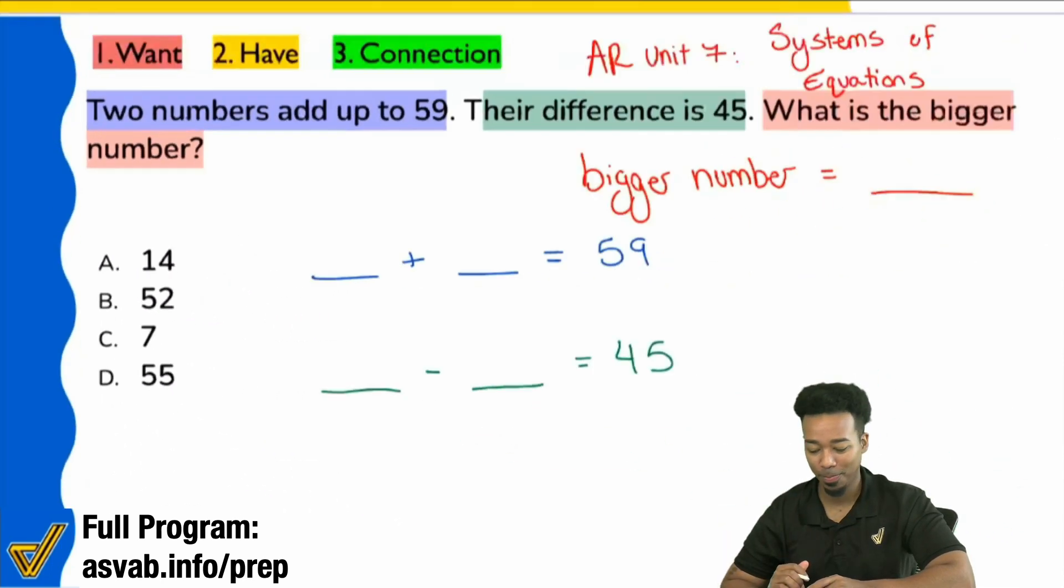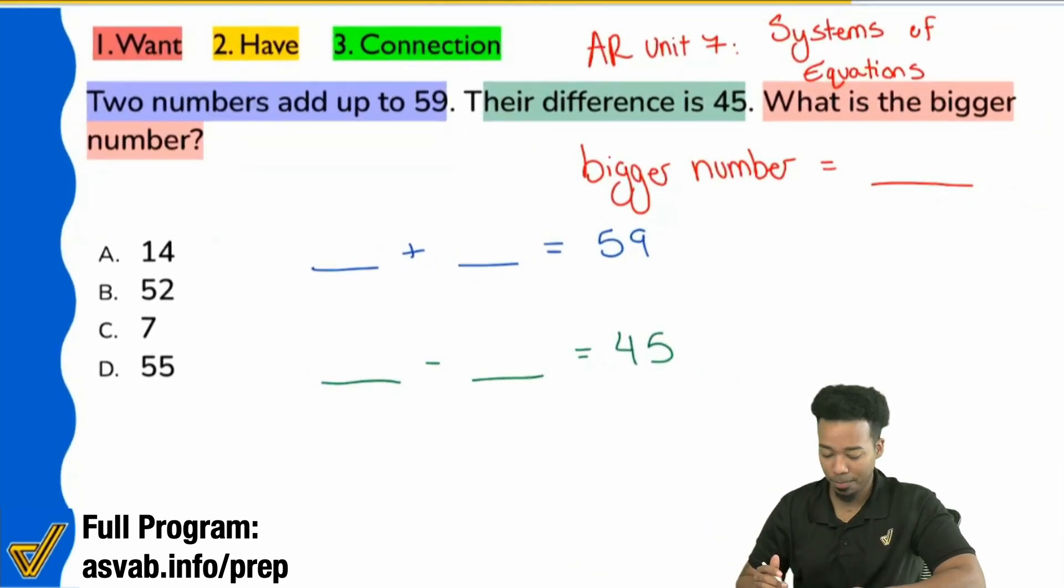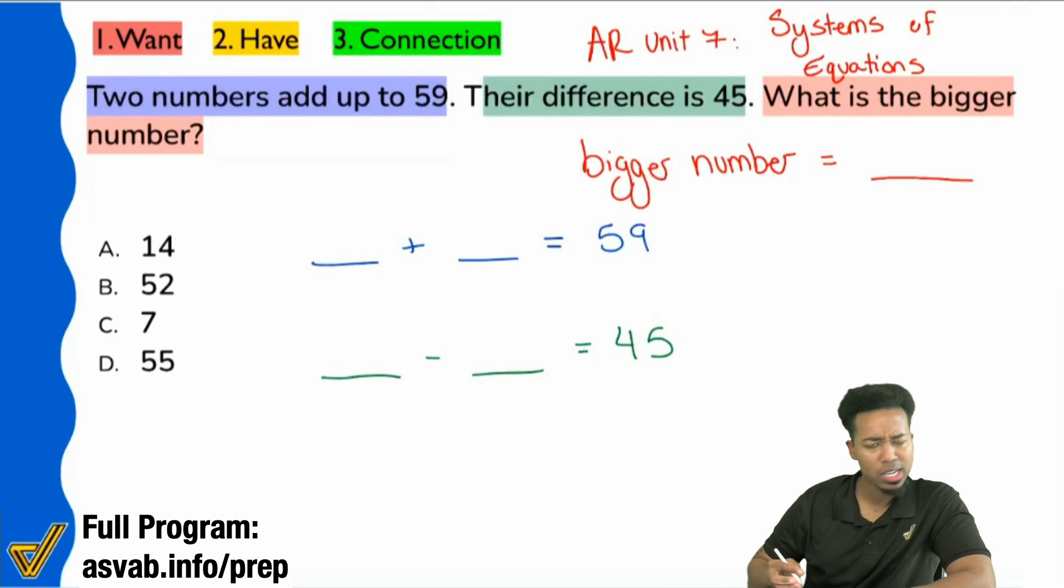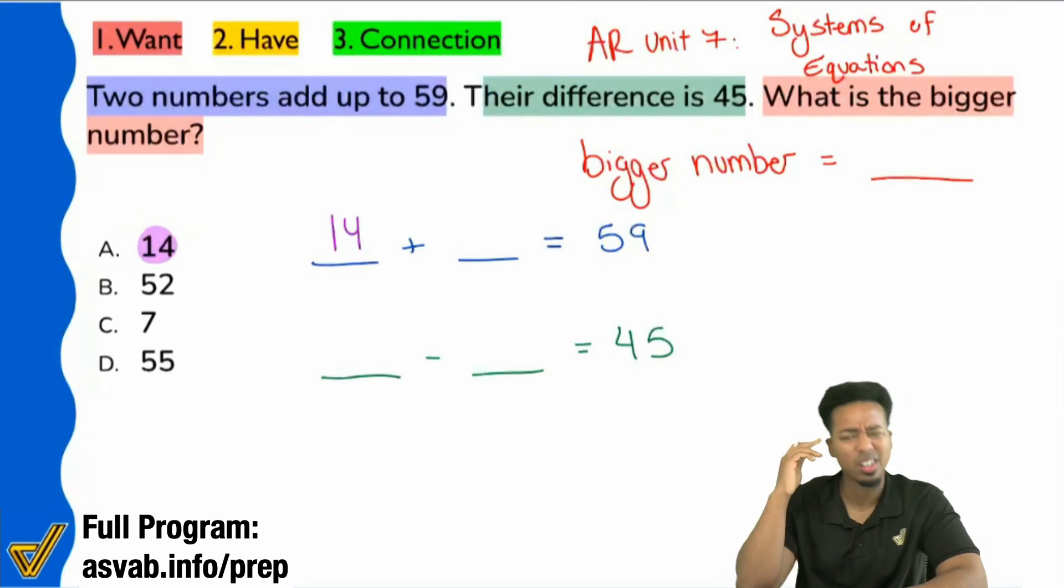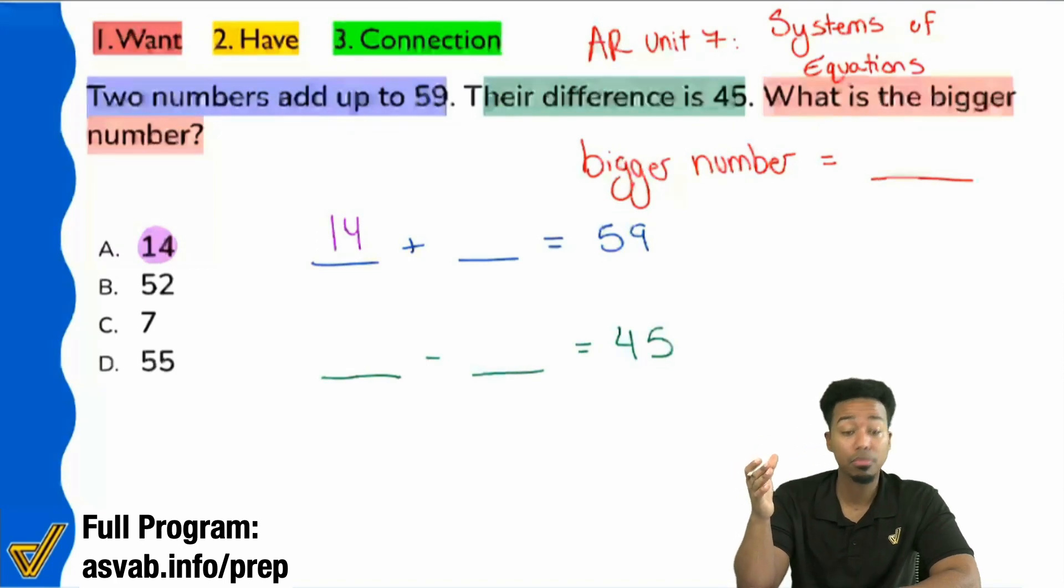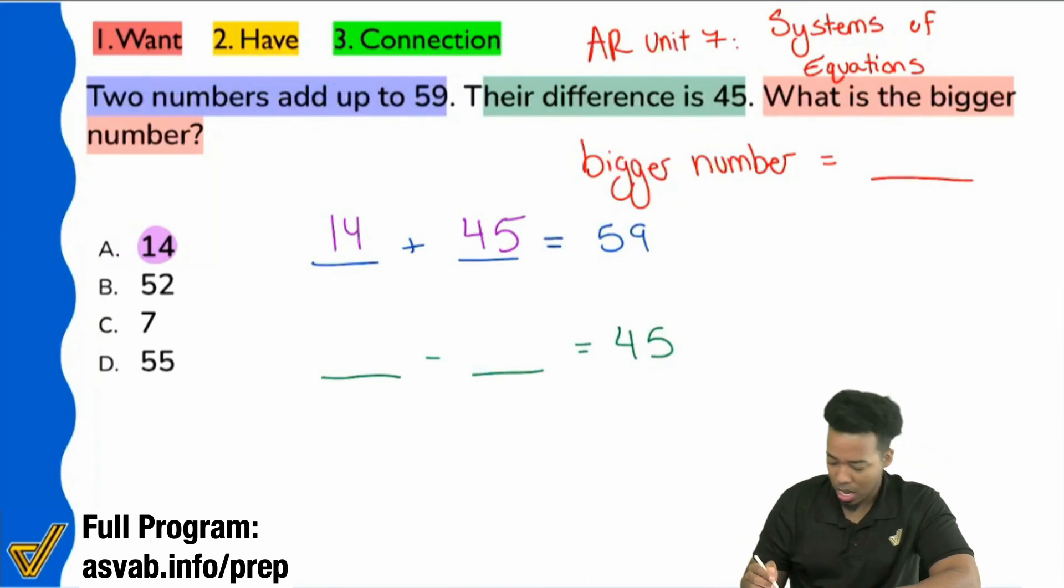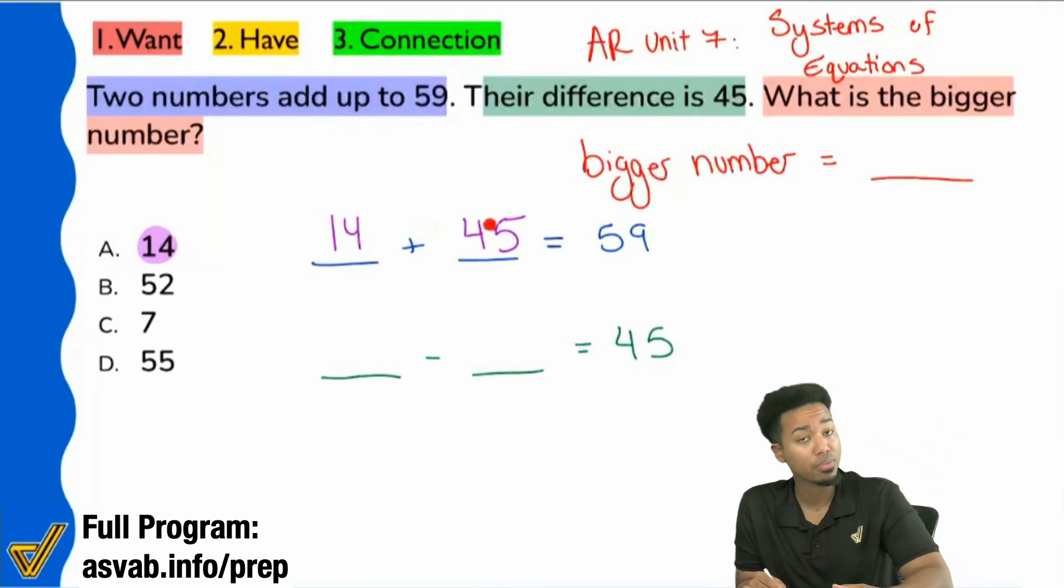So here's what I'm going to do. I'm going to pretend the answer choices have the answer. So I'm going to say, hey, let's grab 14. Let's see if 14 can work. Everybody, if I plug in a 14 right there, what number do I have to add to get all the way up to 59? What would the other number have to be? Right. The other number would have to be 45. Everybody, okay. 14 plus 45, is that 59? It is.